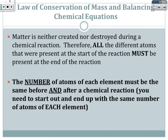Not only must all those elements be present, but the number of atoms of each element must be the same before and after a chemical reaction. So not only do you have to have sodium, chlorine, and hydrogen, but if you start out with six sodiums, six chlorines, and three hydrogens, you need to end up with six sodiums, six chlorines, and three hydrogens. Both the reactants and the products must balance.